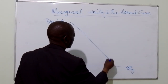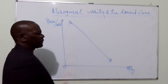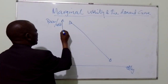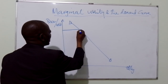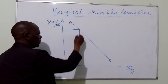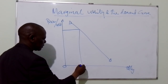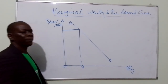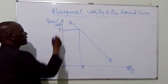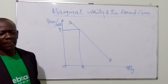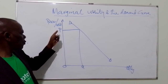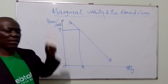This demand curve slopes downwards from left to right, showing us that when the utility is high for the first unit of output, the consumer is willing to pay a high price, or a relatively higher price. Why? Because the utility is high.